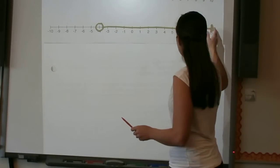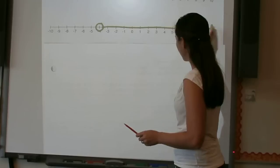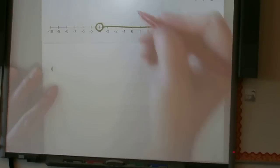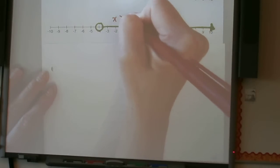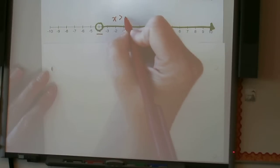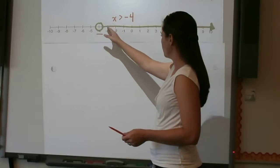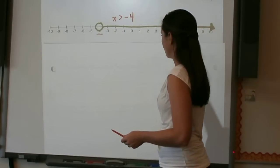Again, going toward the right means that we are increasing our numbers. So our variable needs to be bigger than, so greater than. And it's at the negative four. So x is greater than negative four. x could be negative three, x could be negative one, x could be 0.5. But either way, any value that you get for x needs to be greater than negative four.